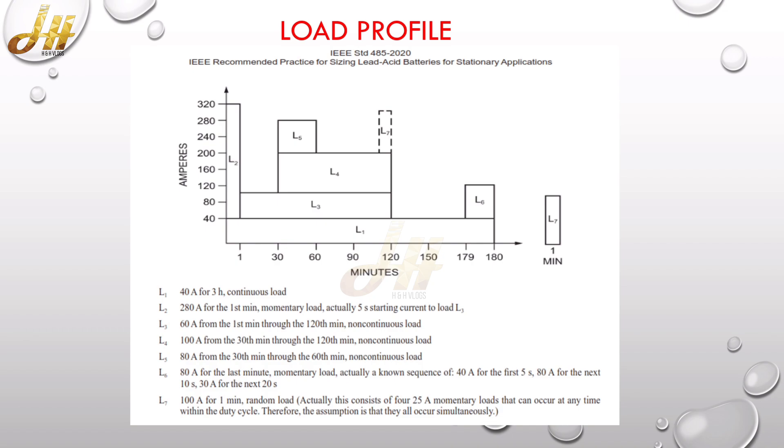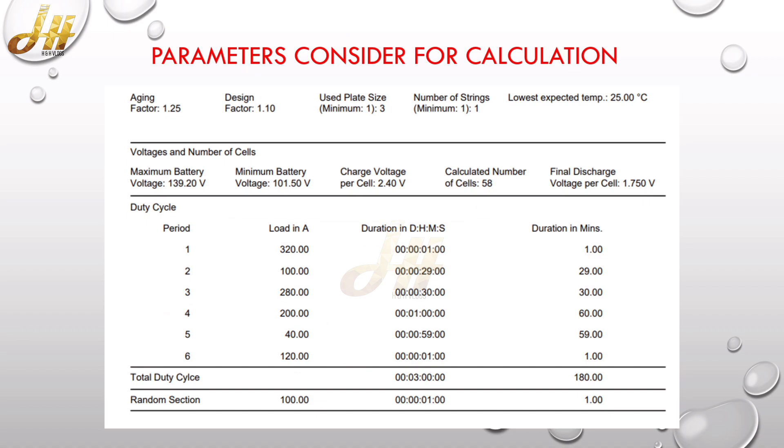And added to the calculated sizing capacity. For sizing the battery, we feed the details in numerical form in the software, and there are other factors or parameters considering the calculation, which are aging factor 1.25, design factor 1.10, and the lowest expected temperature which is 25 degrees C, and the final discharge voltage per cell is 1.75 volt. So the total minimum voltage of the battery set is 101.50.